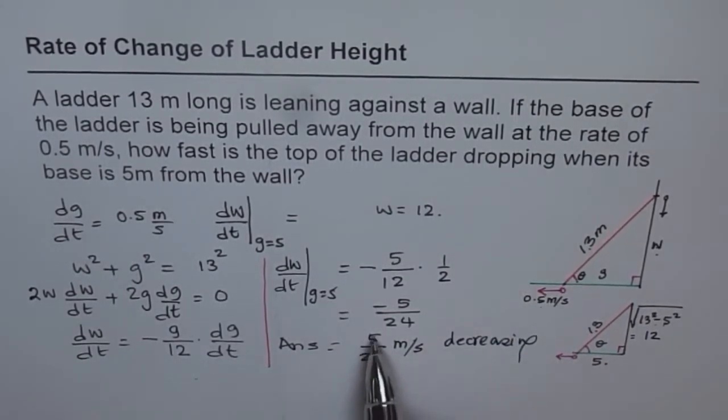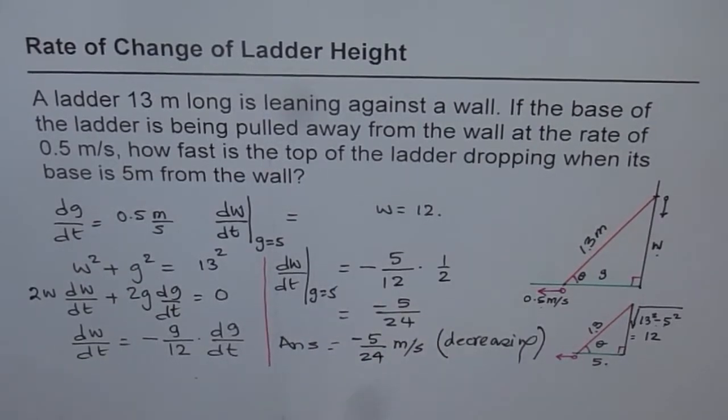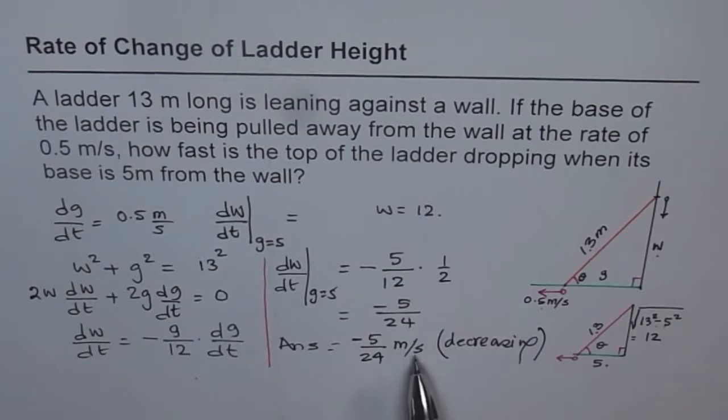We can write decreasing here. Decreasing at the rate of 5 over 24 meters per second would have been a better statement. I will write decreasing in brackets and write this with a minus sign. Rate of change of height is minus 5 over 24 meters per second. That really means height is decreasing at the rate of 5 over 24 meters per second.